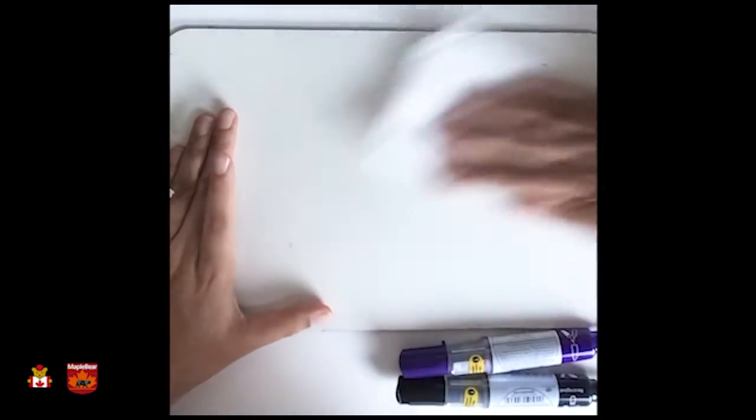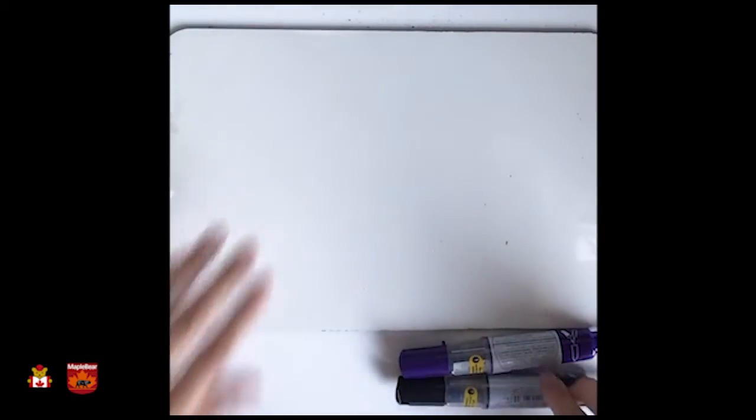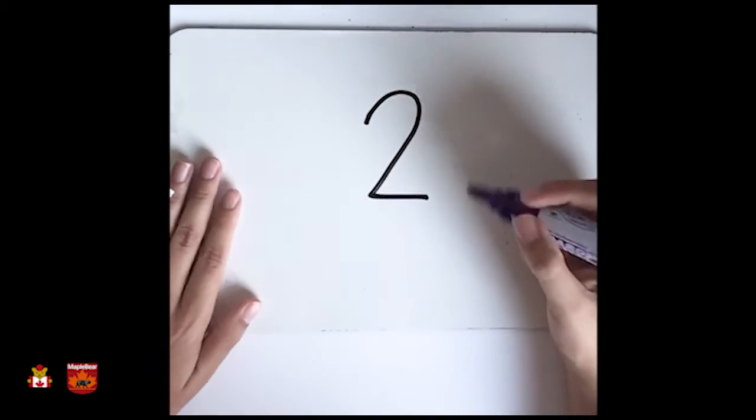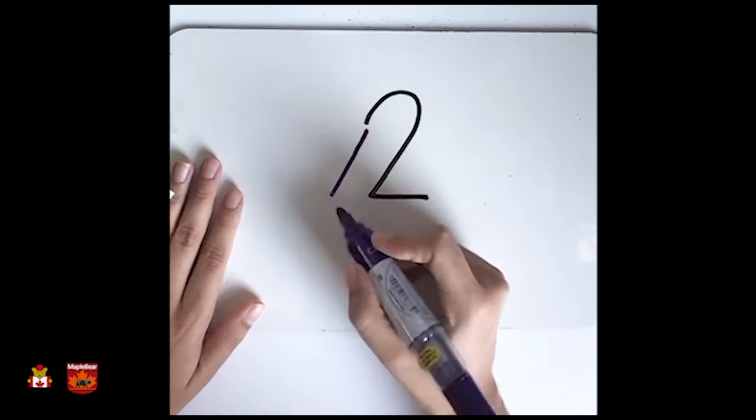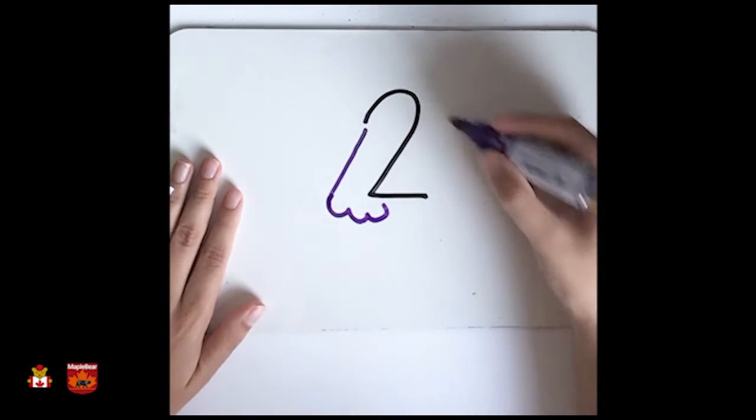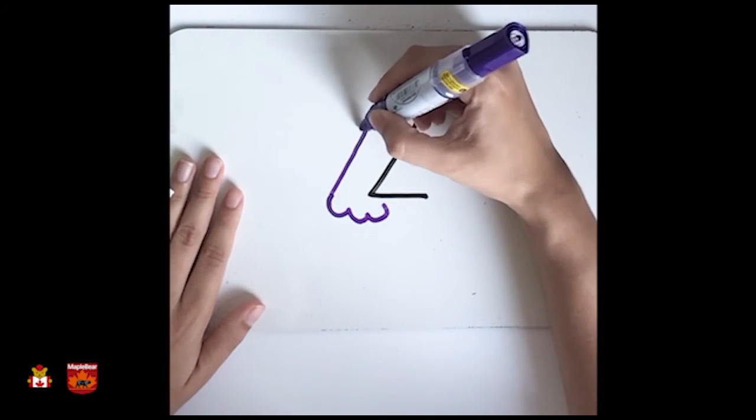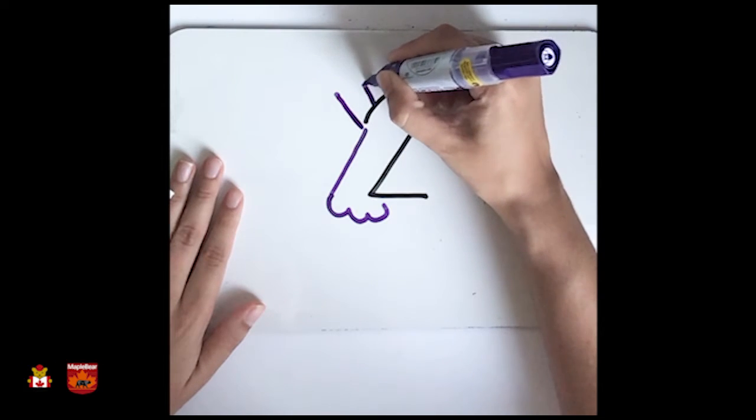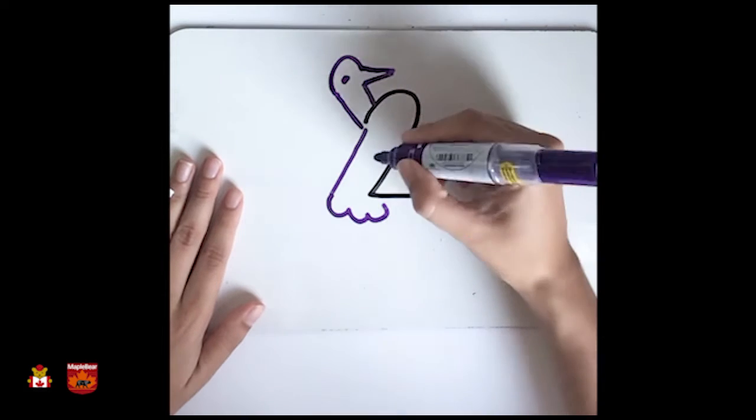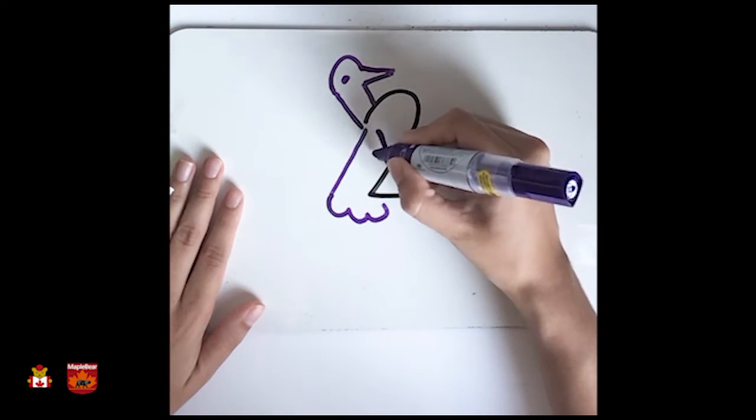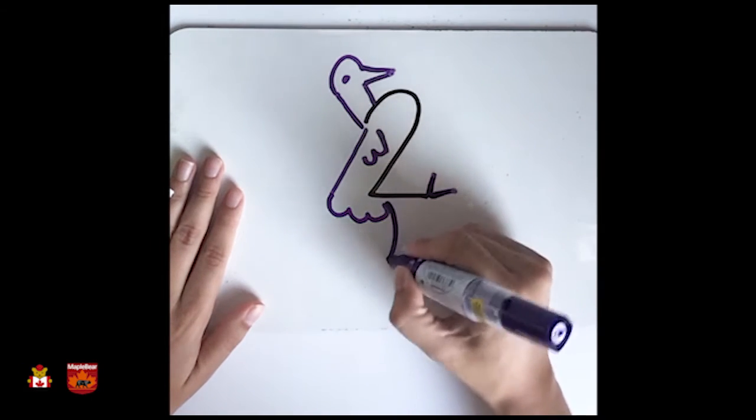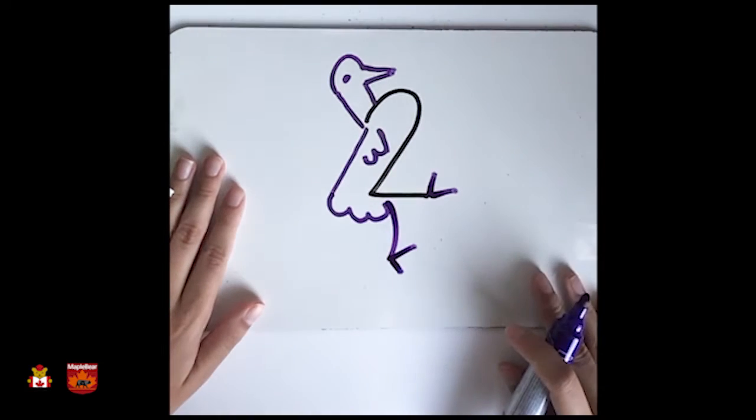We're going to do now number two. Okay, so trace number two. Okay, and we are going to do another thing. Let's see. Can you guess what is it? You know? And now, we have a bird.